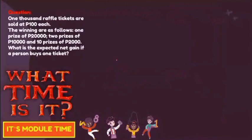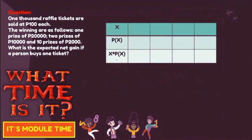For question number 4: 1,000 raffle tickets are sold at 100 pesos each. The prizes are: one prize of 20,000 pesos, two prizes of 10,000 pesos, and 10 prizes of 2,000 pesos. What is the expected net gain if a person buys one ticket? We will use a table. The sample space is 1,000 tickets, and the cost per ticket is 100 pesos.